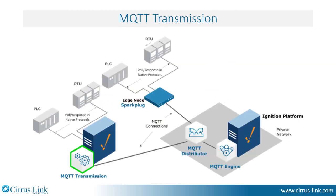Just to recap, the MQTT transmission module, as highlighted in green in this picture, is installed on the Inductive Automation Ignition platform. It takes any tags within the Ignition tag tree, including complex data types such as UDTs, and transmits them to an MQTT server in the MQTT Sparkplug payload format.